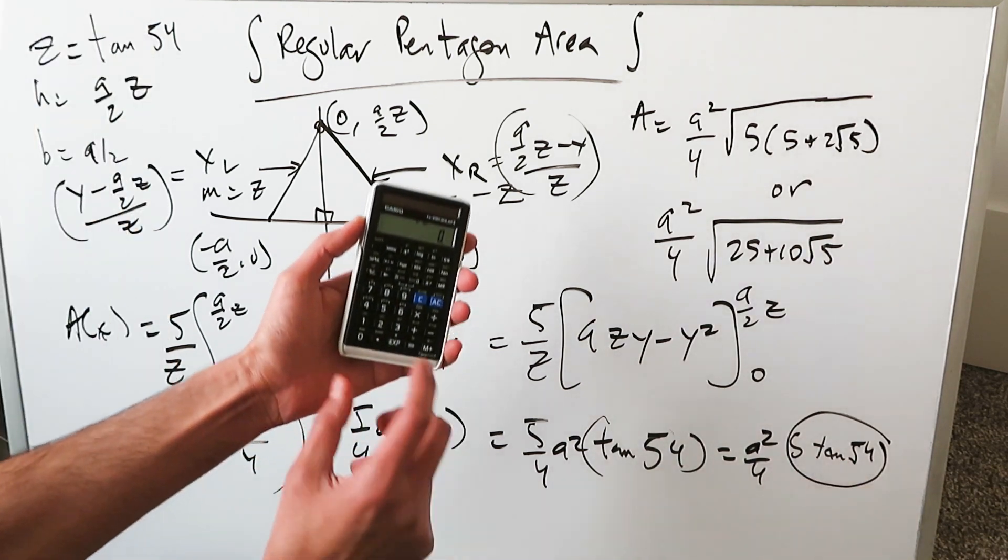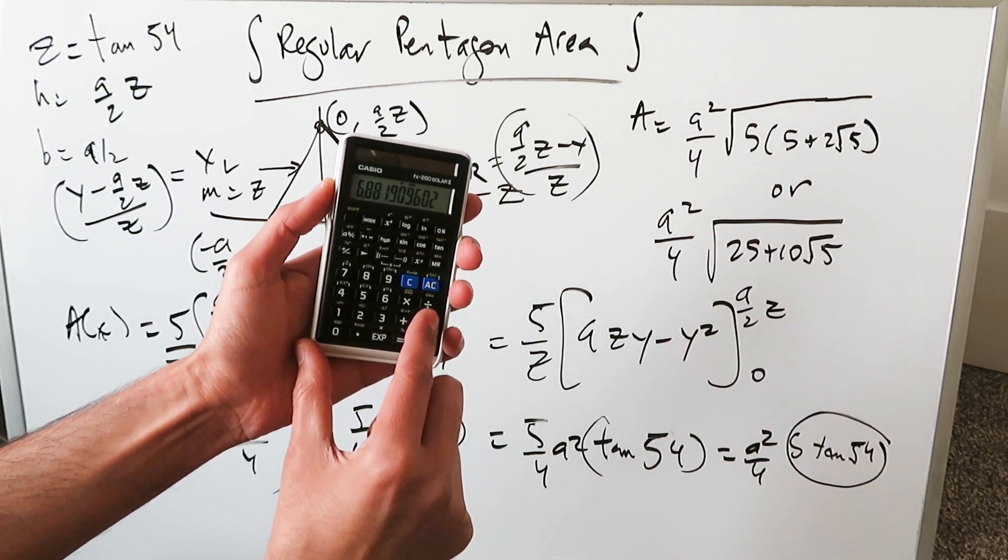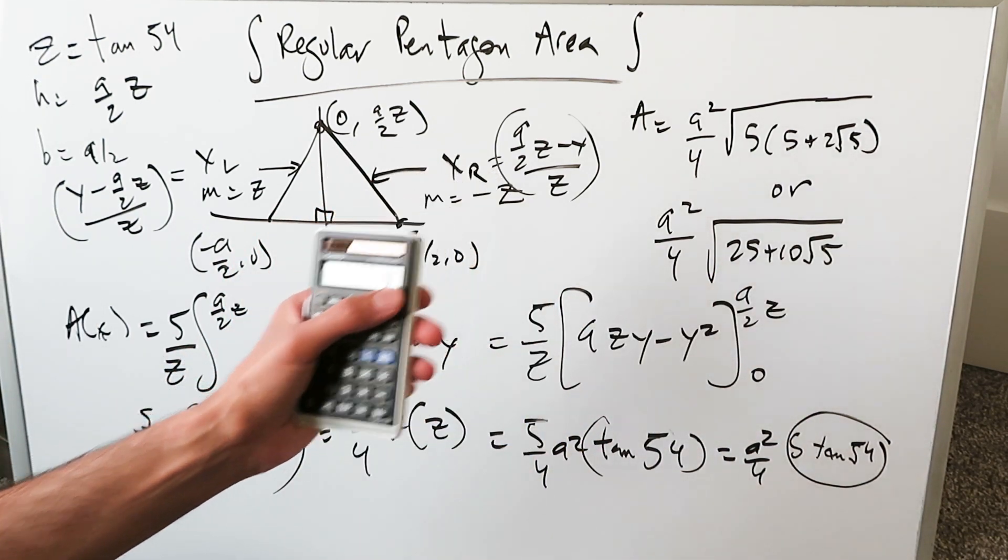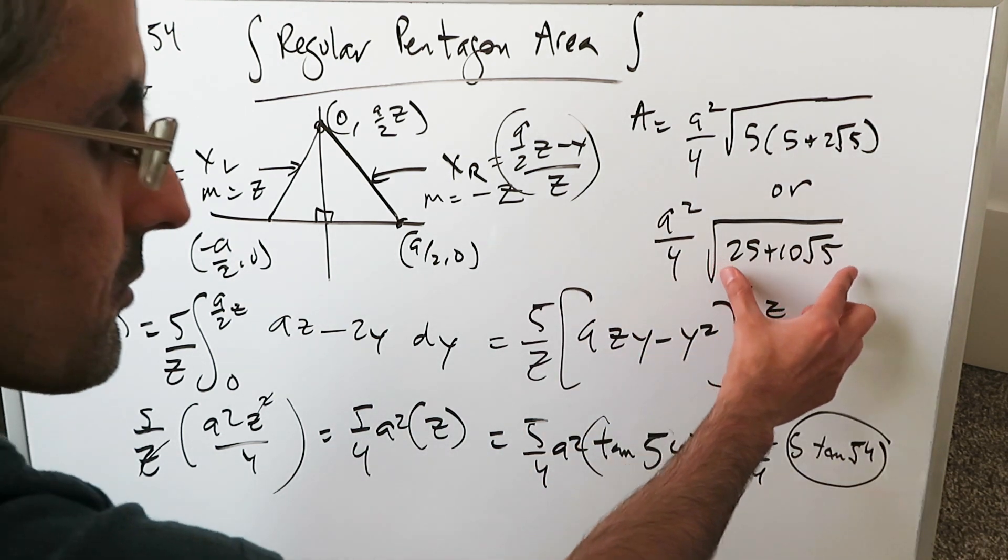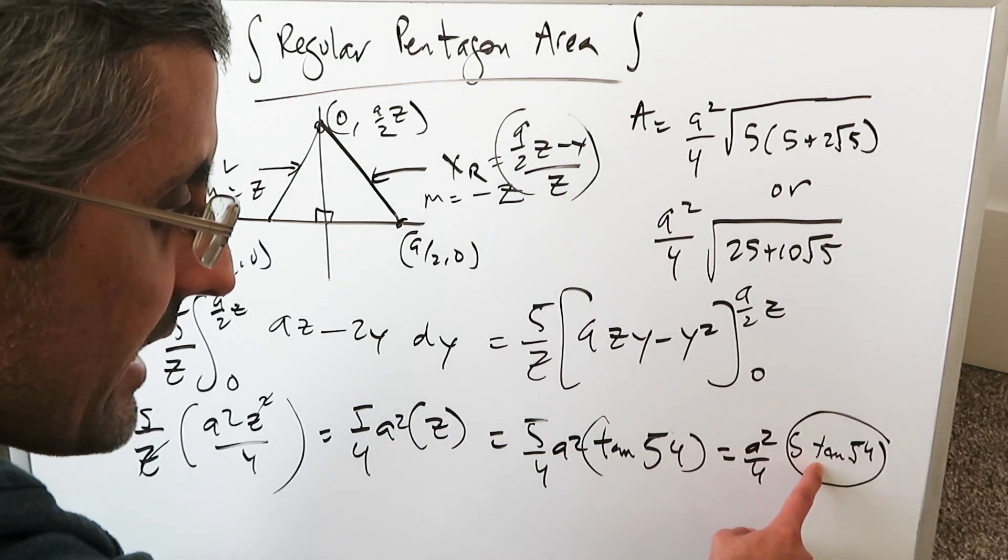Now look what I have got: 5 tan 54. Do 54 tan multiplied by 5 and minus it from my saved value which is this and it will zero out, which means they're mathematically equal and they are indeed equal. Square root 25 plus 10 root 5 is mathematically equal to 5 times the tan of 54. It just is.